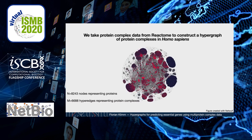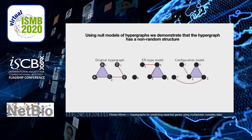We take multi-protein complex data from the Reactome database to construct a hypergraph of human protein complexes. We obtain a network with about 8,000 nodes which represent the proteins and about 7,000 hyperedges which represent protein complexes. First, we investigate whether the hypergraph we obtained has a non-random structure. We do this by investigating two different null models and compare different hypergraph properties between the original hypergraph and the null models.